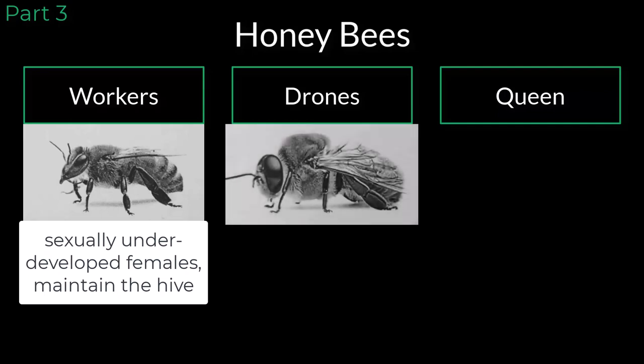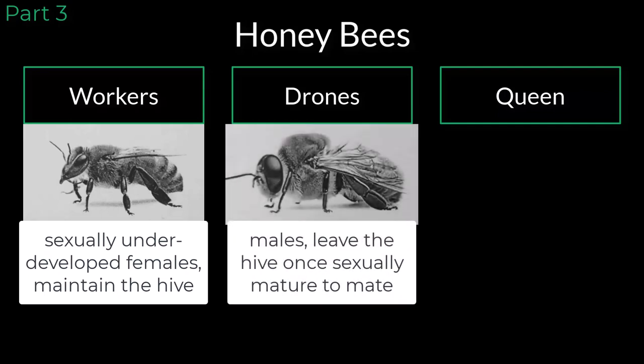Drones are male bees that will leave the hive once they are sexually mature. Drones usually stay in the hive until they are eight days old. After that, they leave the hive daily looking for a queen bee from a different hive to mate with. Drones are large and eat three times as much food as worker bees. And for that reason, if there are too many drones in one hive, it can strain the colony's food supply. Once colder weather comes and food becomes more scarce, drones are usually forced from their hive and left to starve.